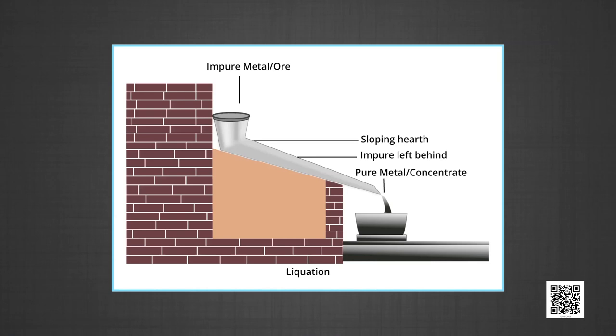The next method is liquation. This method is used to purify metals having a low melting point, like bismuth, tin, lead, mercury, etc. The impure metal is made to flow on a sloping hearth of a furnace and gently heated in an inert atmosphere, that is, absence of oxygen. The impurities which are less fusible than the metal are left behind on the top of the hearth, whereas the fusible metal flows down.